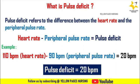The heart rate and peripheral pulse rate should be the same or very close to each other. A pulse deficit may indicate an underlying condition requiring medical attention, such as an irregular heart rhythm, poor peripheral perfusion, or other cardiac or vascular conditions. In cases where the patient has a pulse deficit, it should never be delayed — it must be reported immediately and continuous monitoring should be done.